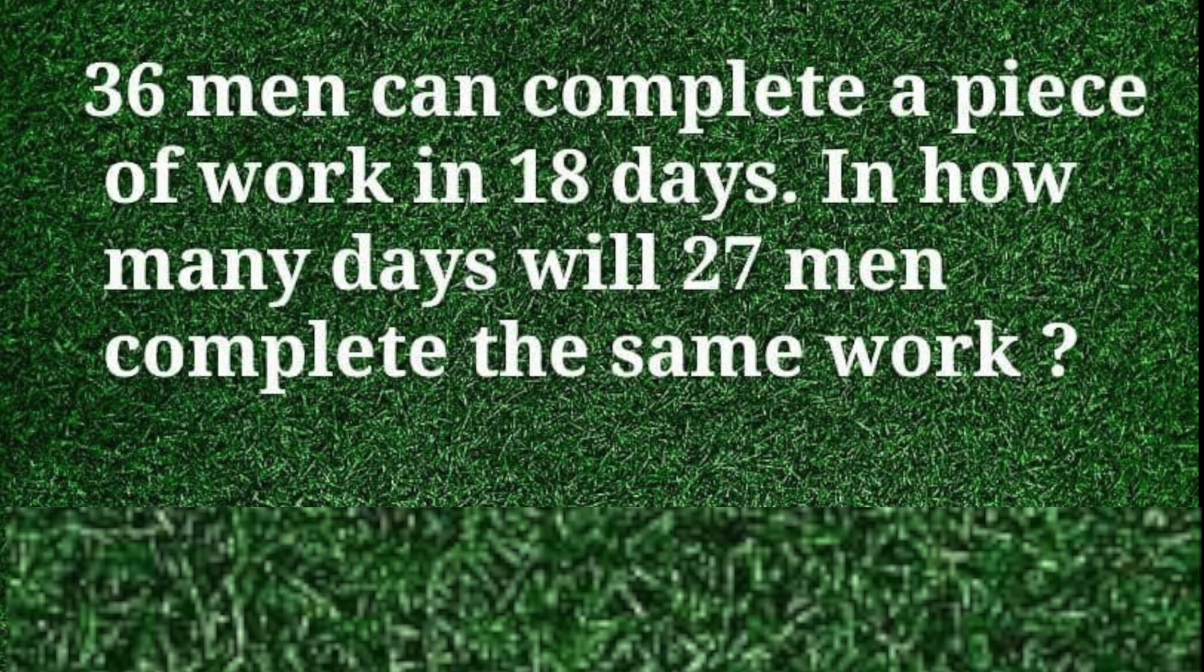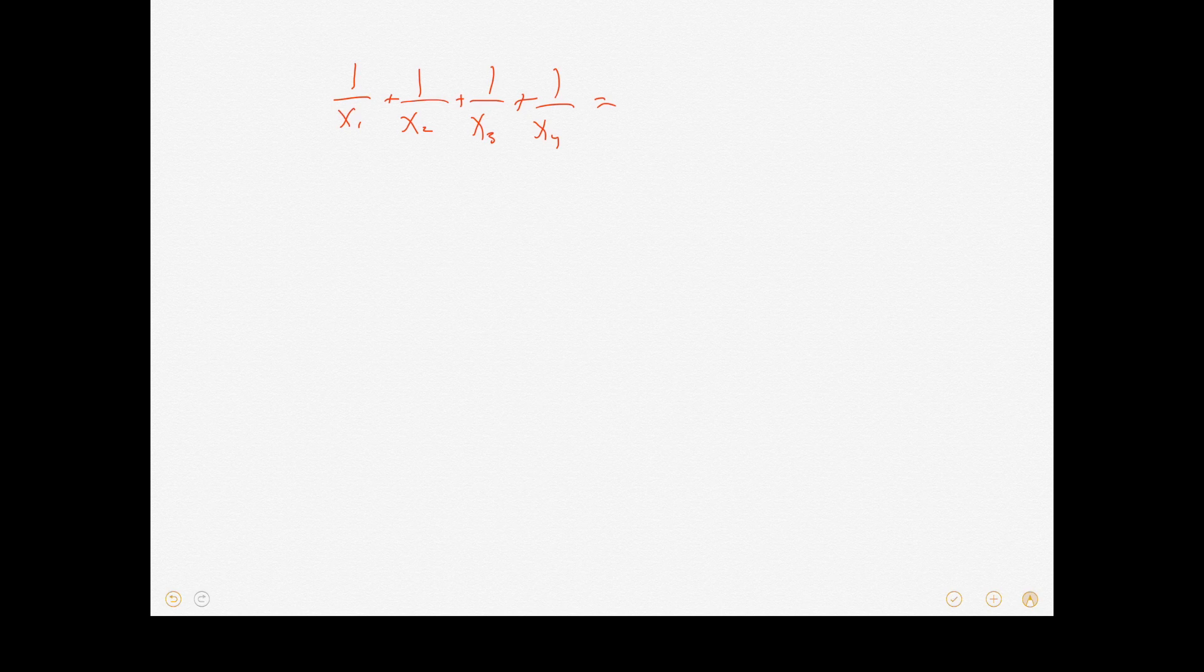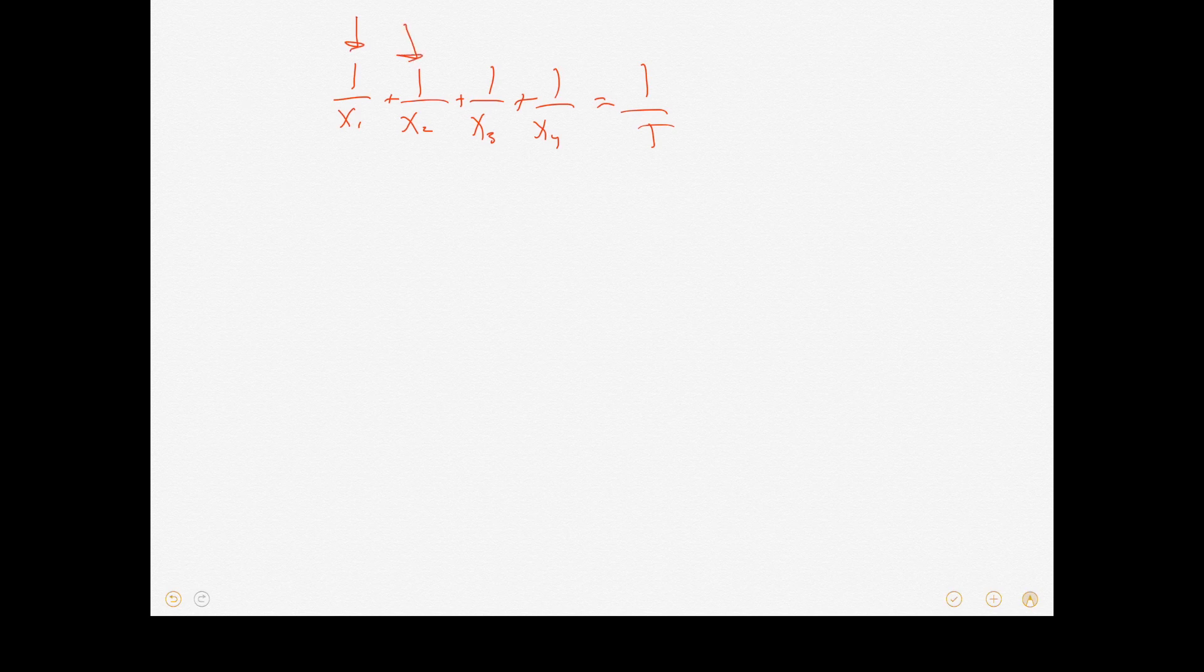All right, let's do it together. The first order of business on these work problems is you have to understand one thing. It's this theory: 1/x₁ + 1/x₂ + 1/x₃ + 1/x₄ equals 1/time. What this means is you can have as many people as you want, and the x means just how long does it take someone to do a project by themselves. And then the t is the time it takes all of them to do it together. So, let me give you a short example.